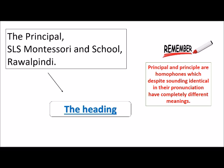This part of the application is called the heading. Remember, 'principal' (P-R-I-N-C-I-P-A-L) and 'principle' (P-R-I-N-C-I-P-L-E) are homophones — they sound identical but have completely different meanings. 'Principal' refers to a person of high authority, while 'principle' is a rule or standard; it is a noun and generally refers to a natural or legal rule.